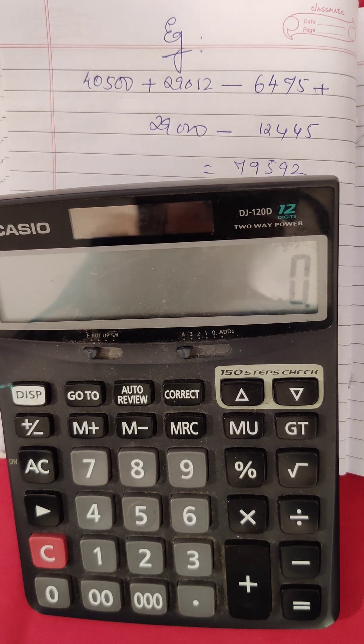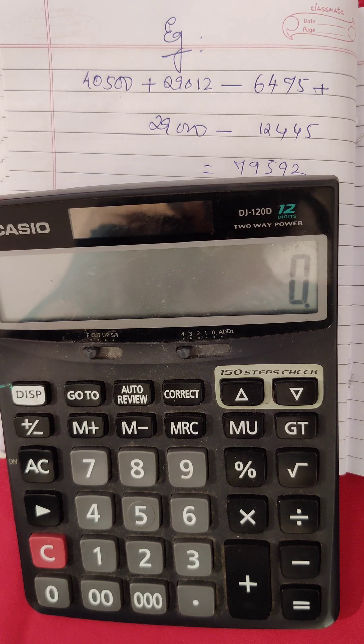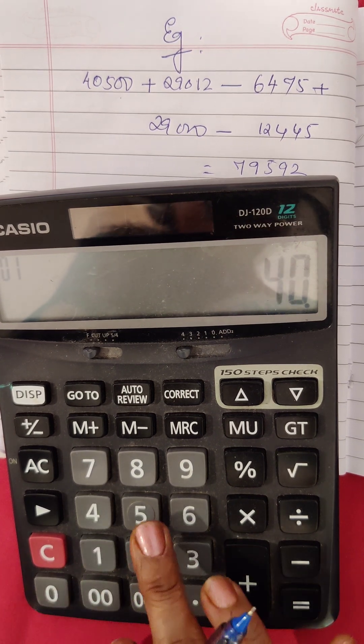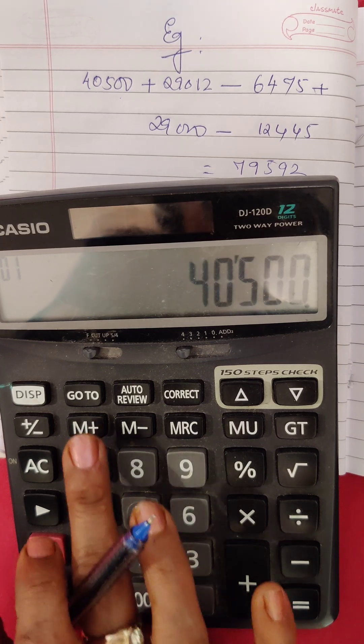First, you have to add up 40,500 plus 29,012. So what you do is you type 40,500 and put it in memory plus.